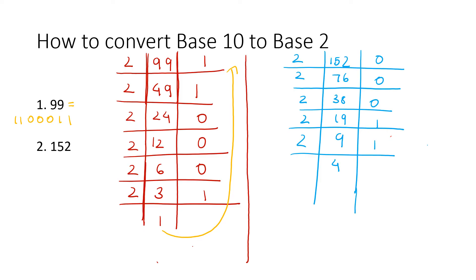Because now it's divisible. So we'll have 2, 2, and 0. And then lastly, 2, that was a horrible 2, 2, 1, and 0.